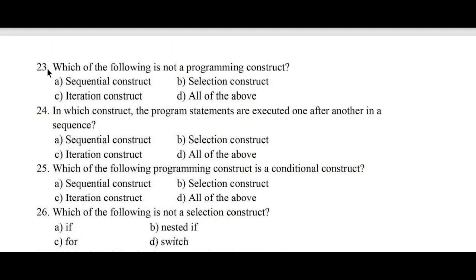Question number 23: Which of the following is not a programming construct? Option A. Sequential construct, B. Selection construct, C. Iterative construct, D. All of the above. So all three of these are programming constructs. Hence option D, All of the above, is the right answer.